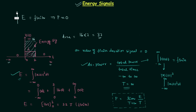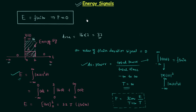This is one important result you must remember and we will use it a lot in coming presentations: E equals finite implies P equals zero. Now, if a signal x1(t) is given, simply calculate its total energy. If the total energy equals some finite value, there is no need to calculate the average power, because when E is finite the average power is zero, and the signal x1(t) is an energy signal.